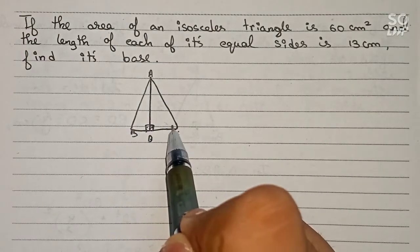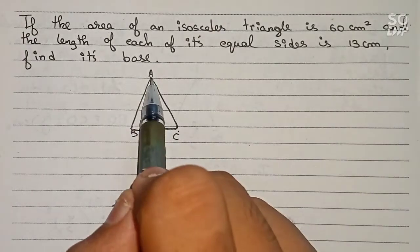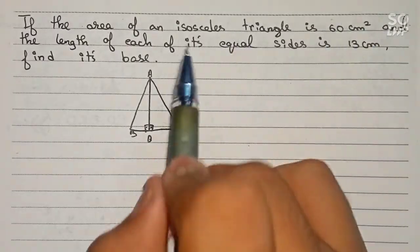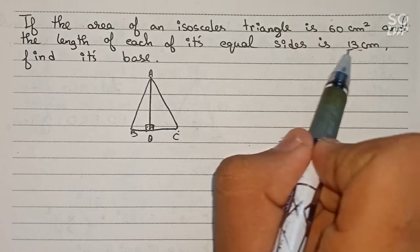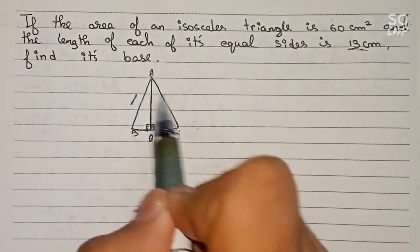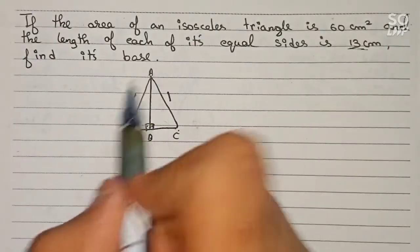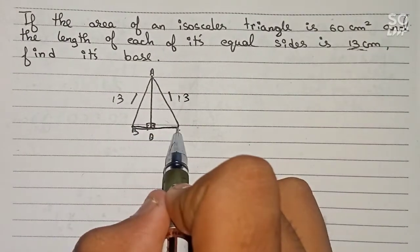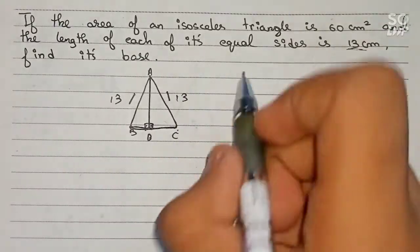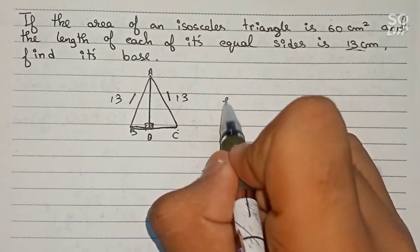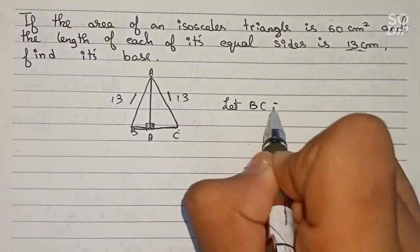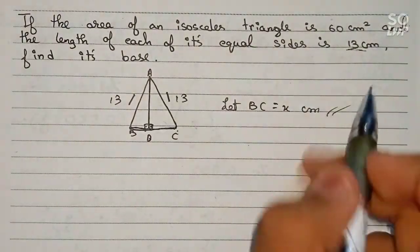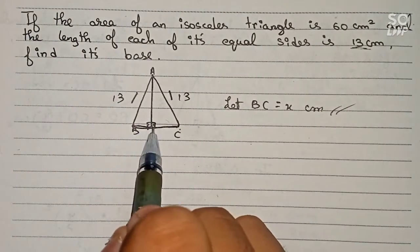We draw it in such a way that BD is equal to DC, so we bisect the triangle. In the question it is given that each of the equal sides is 13 cm, so AB = AC = 13 cm. BC is unknown, so let BC = x cm.